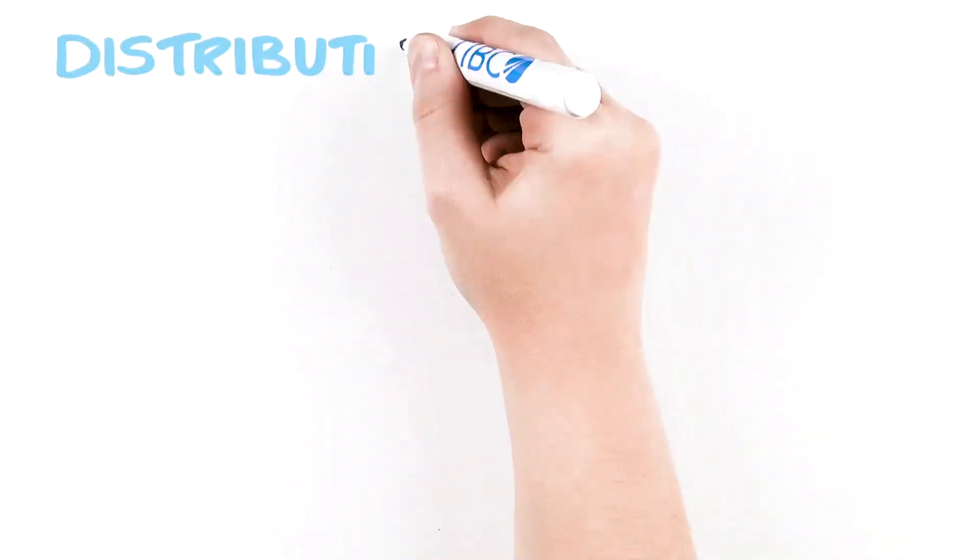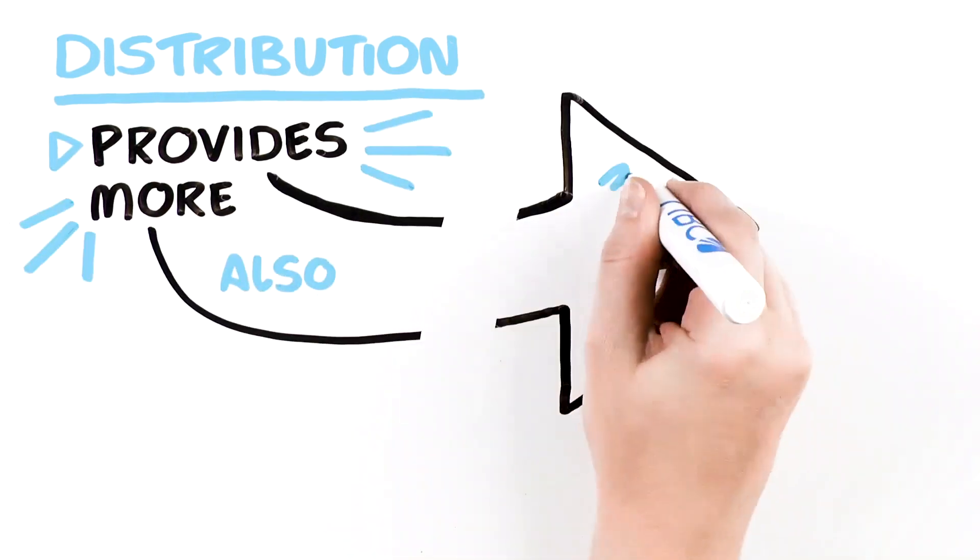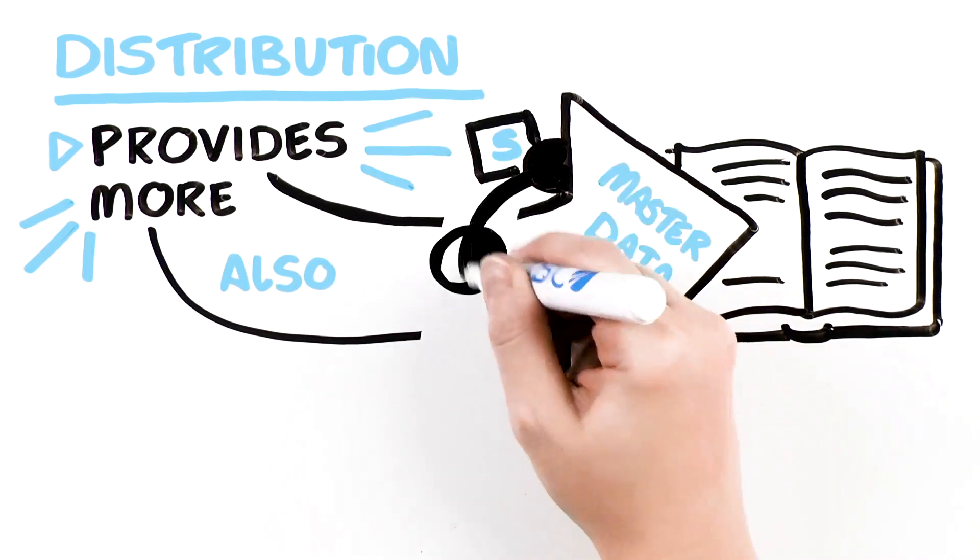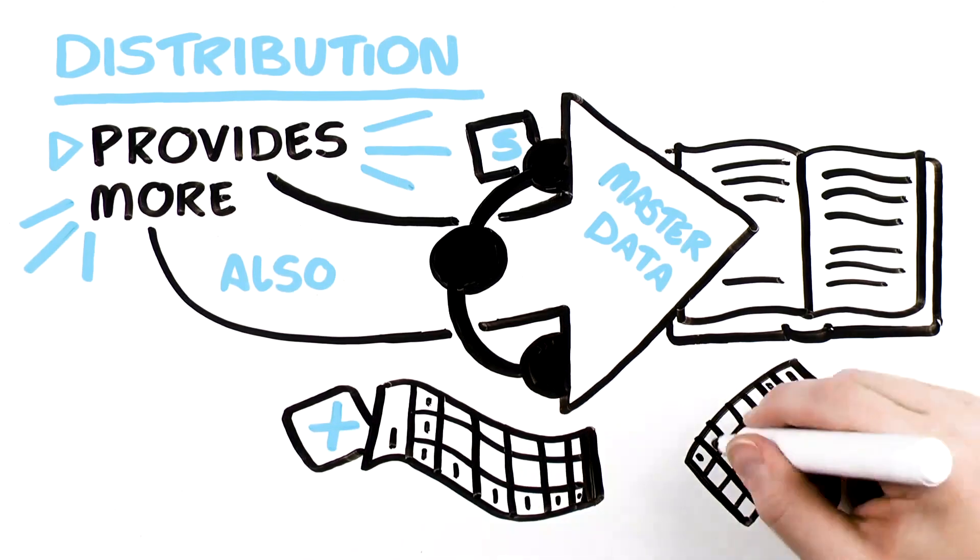Finally, for distribution, it provides more than just data services for systems. It also distributes master data in a human readable form through portals such as SharePoint and spreadsheets such as Excel and our native iOS and Android mobile app EBX Go.